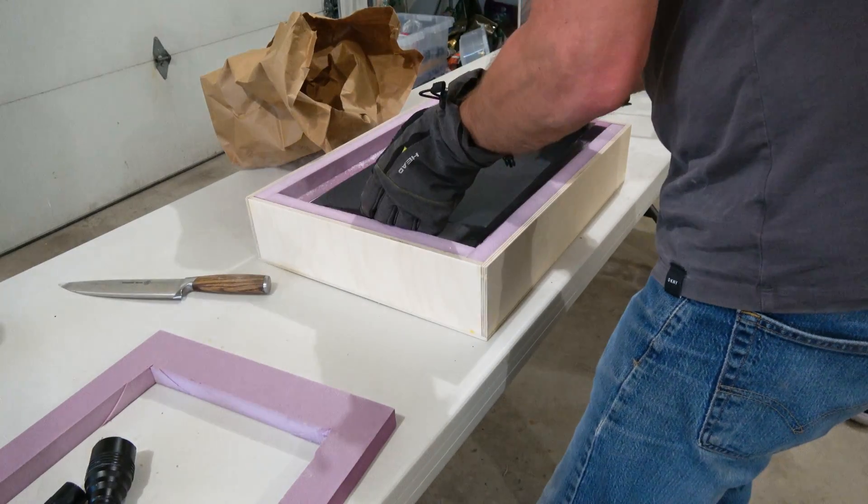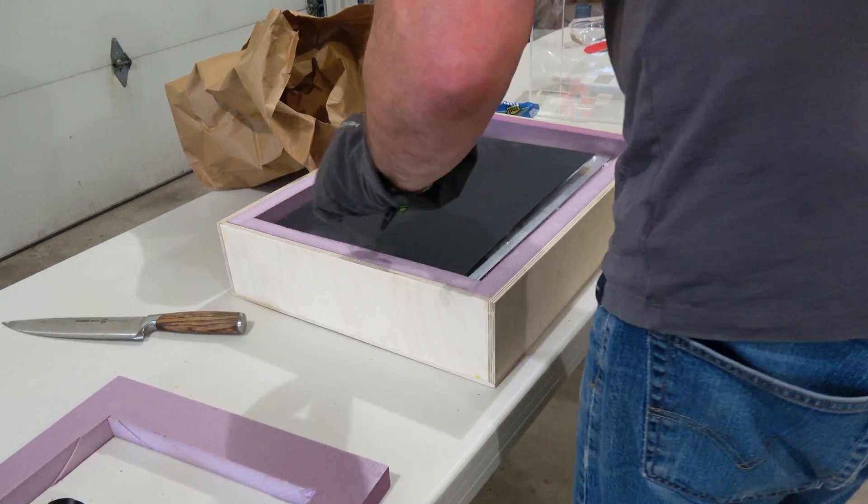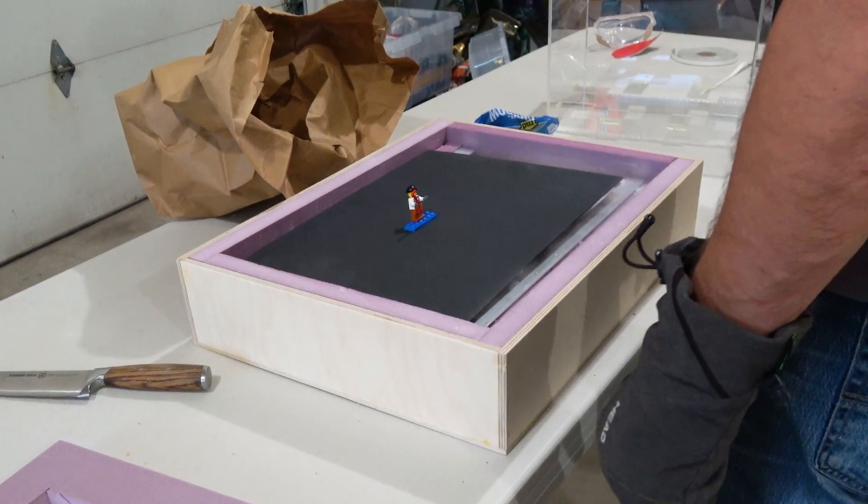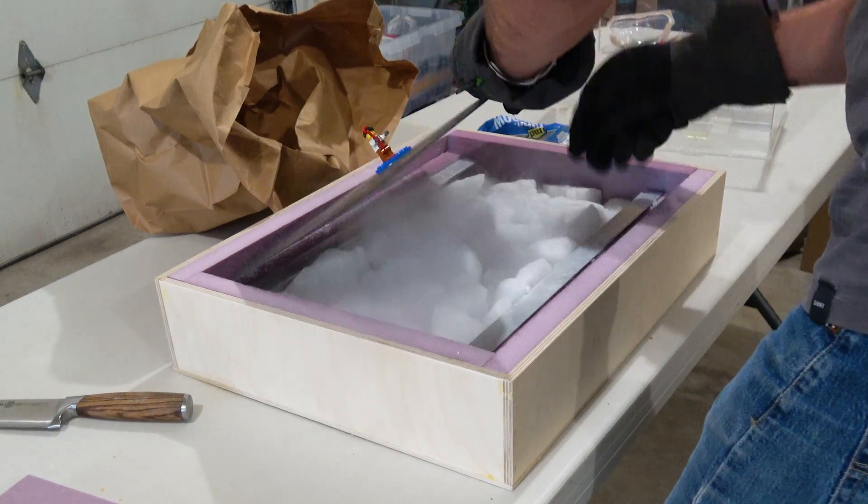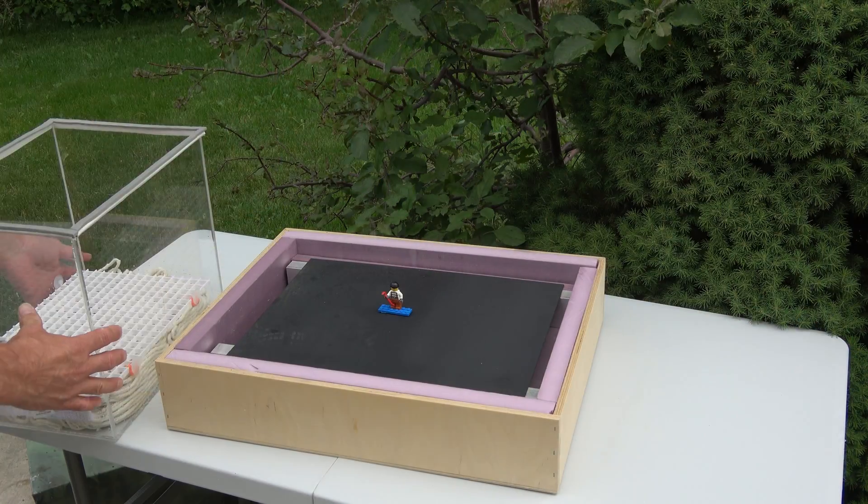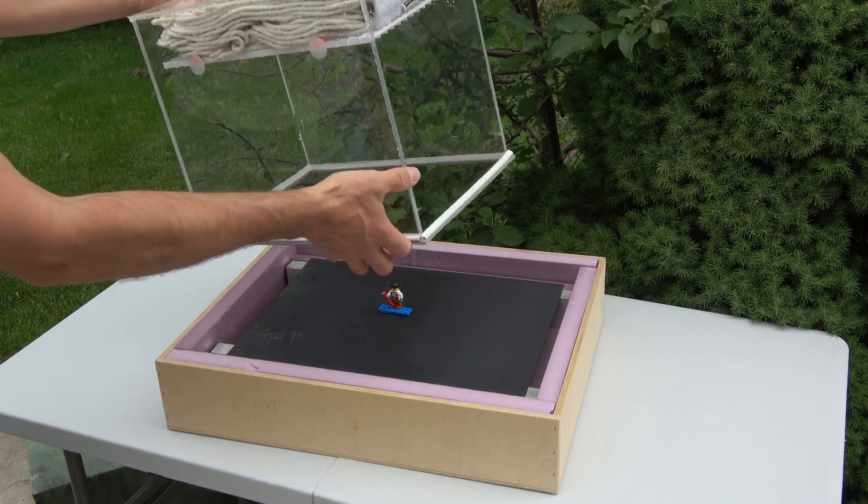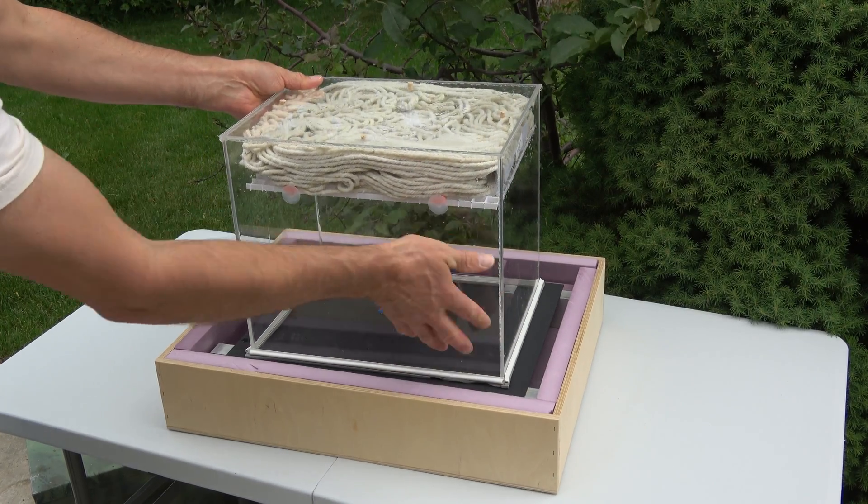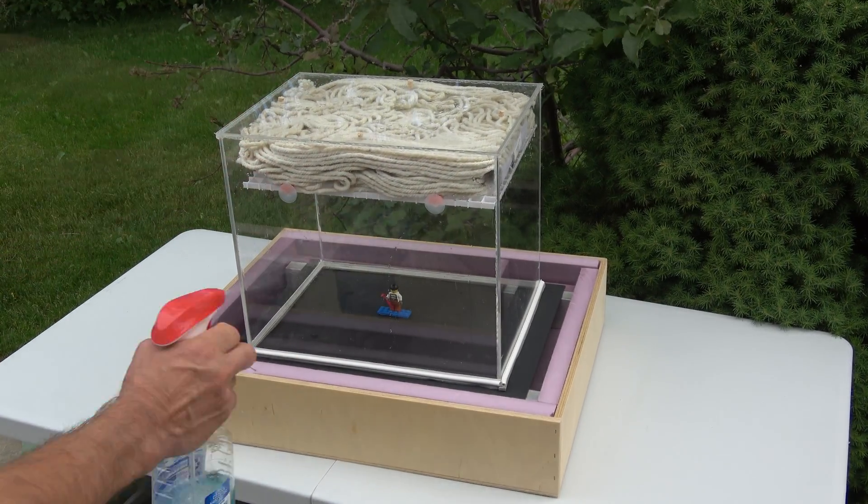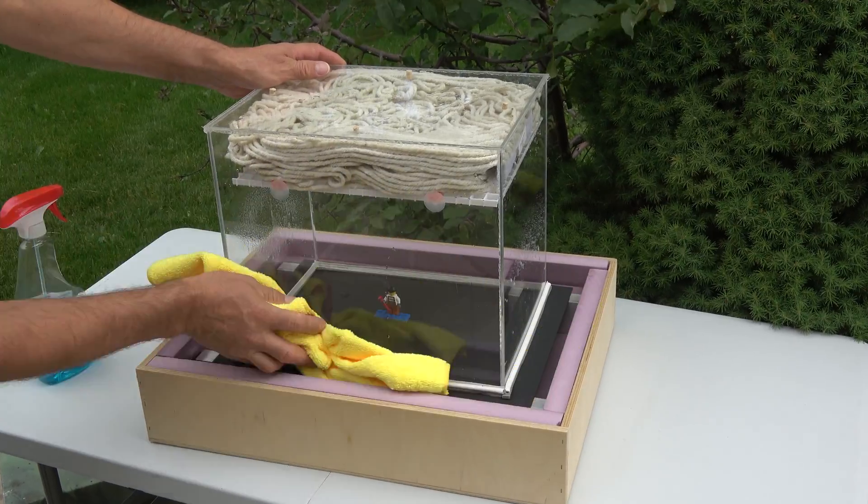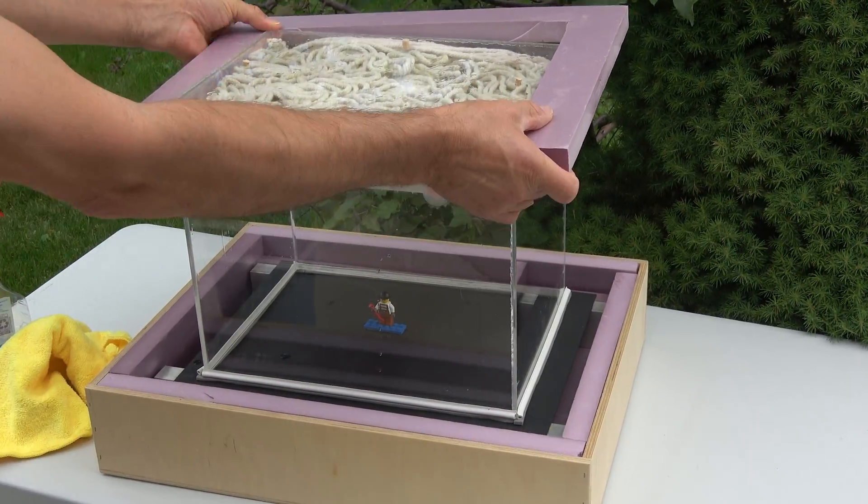As the metal touched the ice, it made a strange sound, like it was singing from the cold. We gently flipped the tank upside down and placed it on top of the freezing metal sheet. Then we cleaned the glass one last time, and added an insulated cover on top.